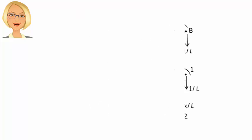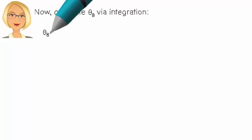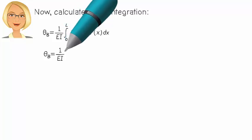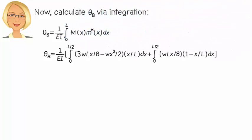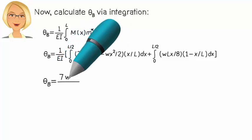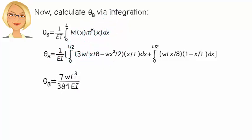Now express theta B as the integral of M(x) times M star x, like this. So theta B equals 7WL cubed over 384EI.